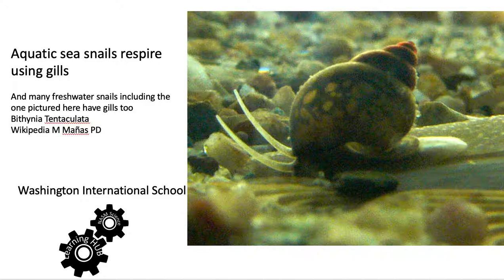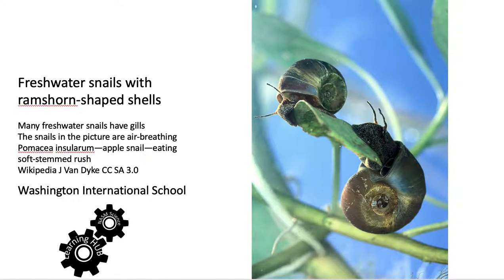Here we have an aquatic freshwater snail that has gills — these are the apple snail. Both of them are eating a soft-stemmed rush, but these ones are air breathing, so they'll come out of the water for breathing.